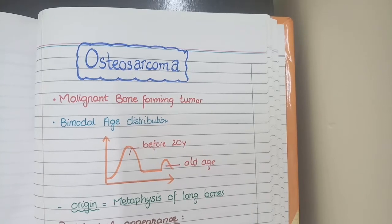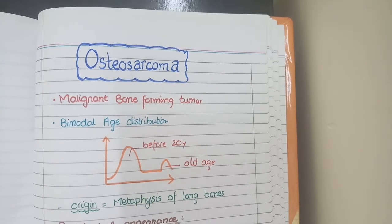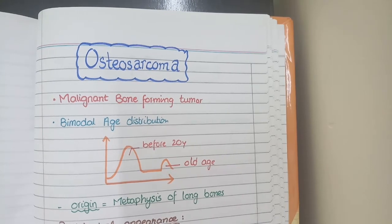In this video we will discuss the pathology of osteosarcoma, which is a malignant bone forming tumor. The first point to understand is the age distribution pattern of osteosarcoma.